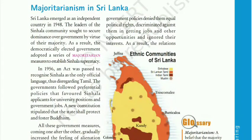Hello and welcome back to Chapter 1: Power Sharing, Class 9. In the last part we discussed about the problems in Belgium and Sri Lanka. In Belgium, there was an ethnic composition with tensions between the French-speaking community, which was in minority but had got more benefits, and the Dutch-speaking community, which was in majority but got lesser benefits. This created tensions between those groups in the late 1950s and 60s.